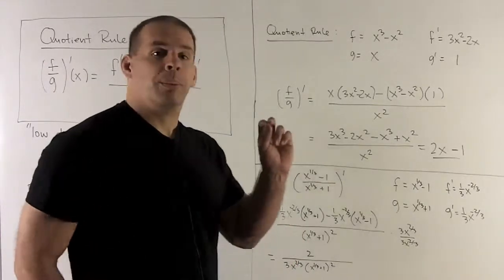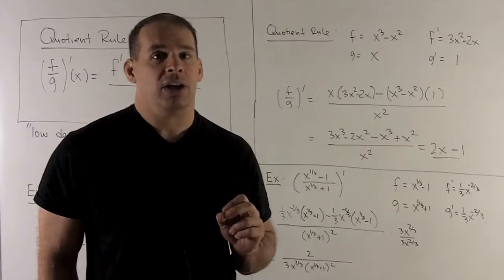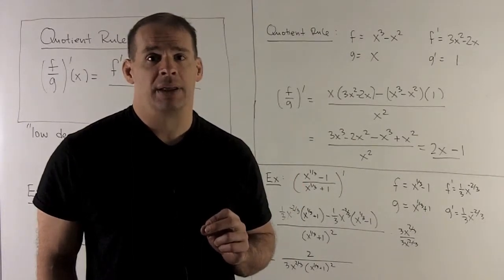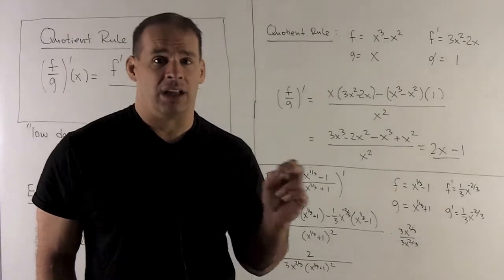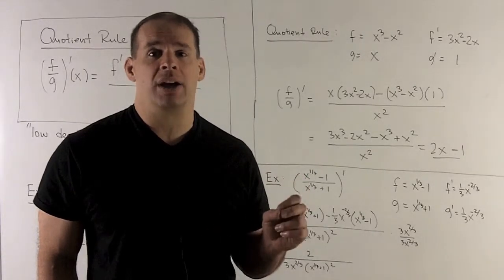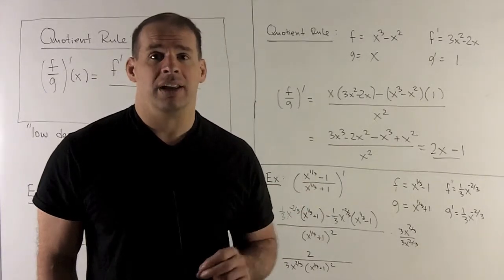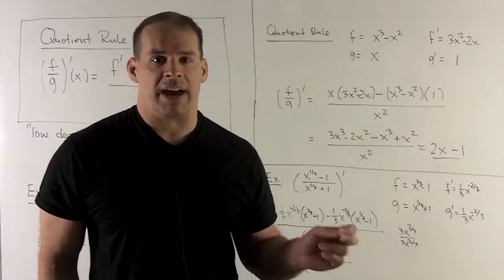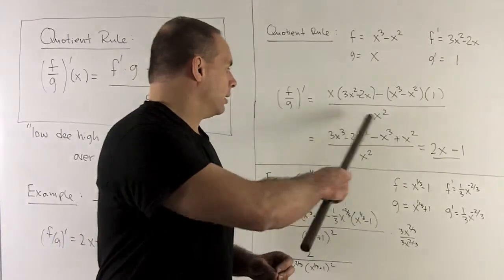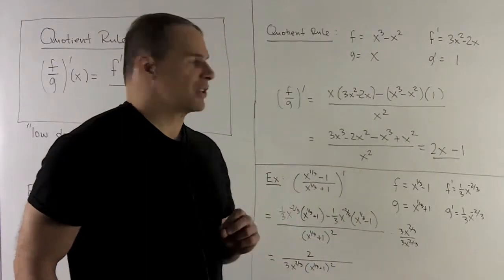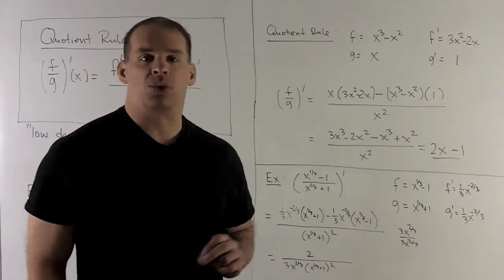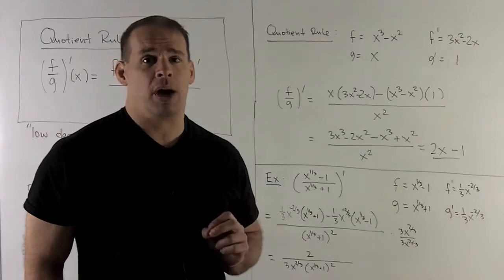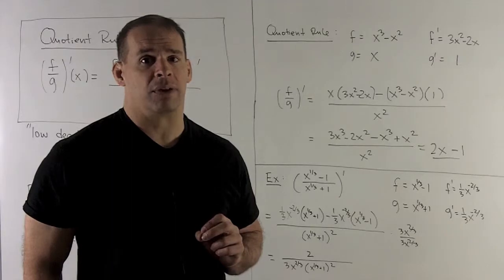Applying 'low d high, less high d low, over low squared': low is x, d high is 3x² - 2x; less high (x³ - x²) times d low (which is 1); divided by low squared, x². Simplifying, the top collapses — I divide x squared into both terms — and the answer is 2x - 1, which agrees with what we got by simplifying first.